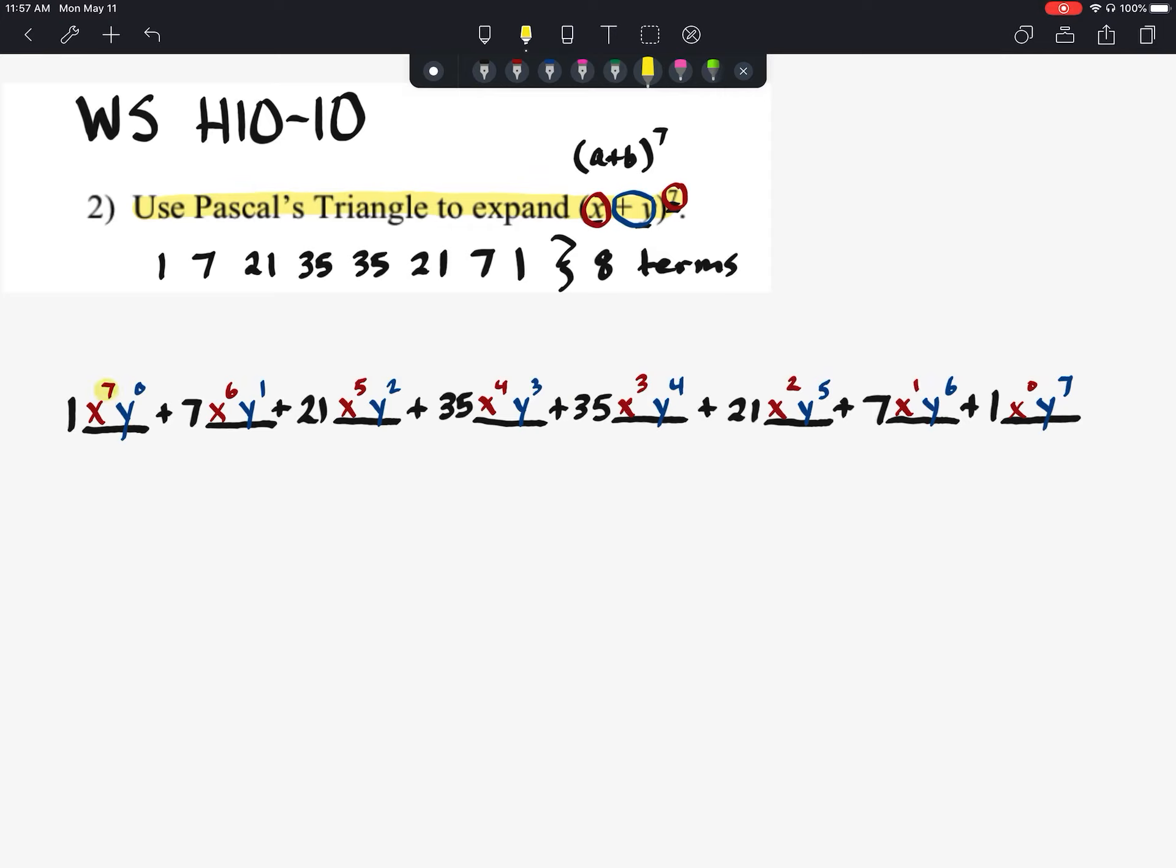Important characteristic to remember, if we add the exponents together on each of these it should give us 7 if you've done it correctly.